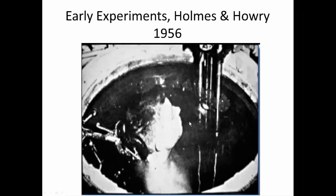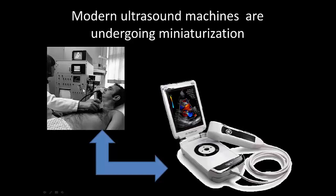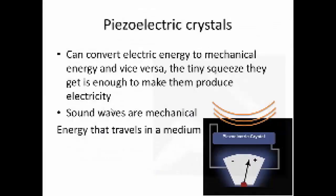Machines were kind of clunky in the 1950s still. You can see that in this experiment from Holmes and Howery, the entire patient had to be submerged in water. Now that we have more sophisticated machines and ultrasound gel, things have gotten much easier. Nowadays, if you compare the size of an ultrasound scanner from the 1960s or 70s to what they look like today, you can see everything is undergoing miniaturization. As technology advances, we can cram more and more capability into these little devices.